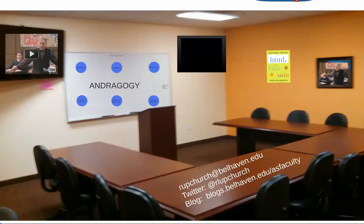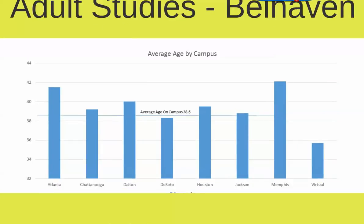We're going to jump into why we're talking about adult education in a different format than what we might consider for traditional. As you can see on the chart, at Belhaven University in the spring of 2016, the average age for adult students was 38.6. It varies from campus to campus but not by much — down to maybe 35.7 at the virtual campus and up to a high of 42 at the Memphis campus. Adults are bringing life experiences into the classroom, which means that teaching them is different than teaching 22-year-olds.